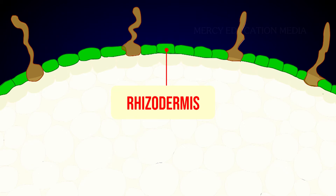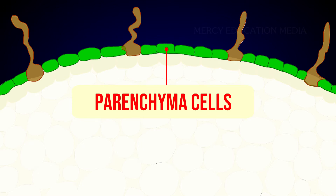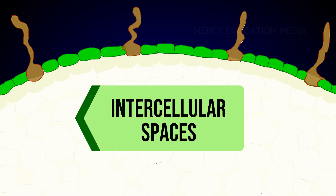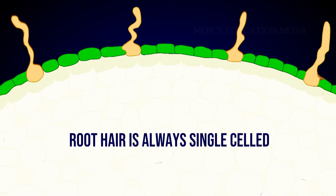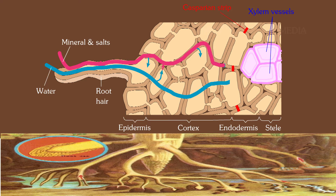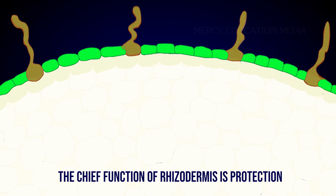The outermost layer of the root is known as rhizodermis or epiblema. It is made up of a single layer of parenchyma cells which are arranged compactly without intercellular spaces. It is devoid of stomata and cuticle. Root hair is always single-celled. It absorbs water and minerals from the soil. The chief function of rhizodermis is protection.